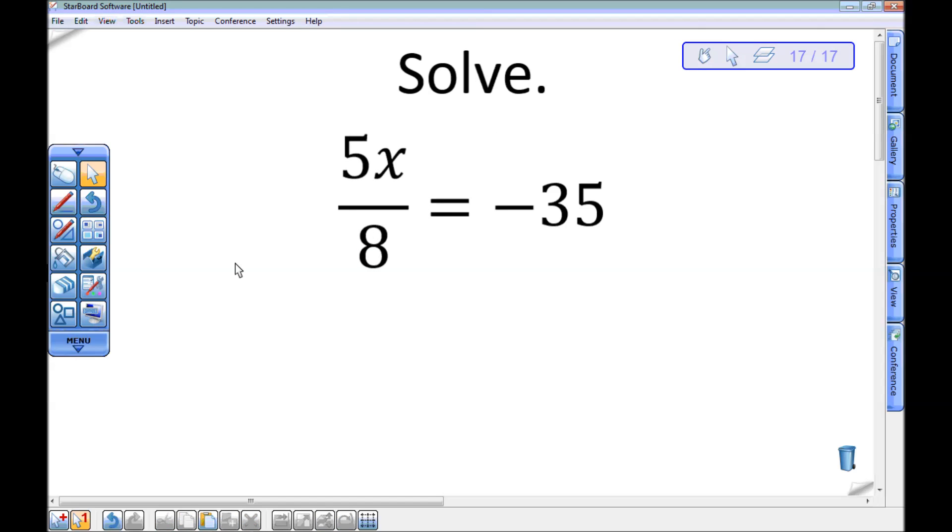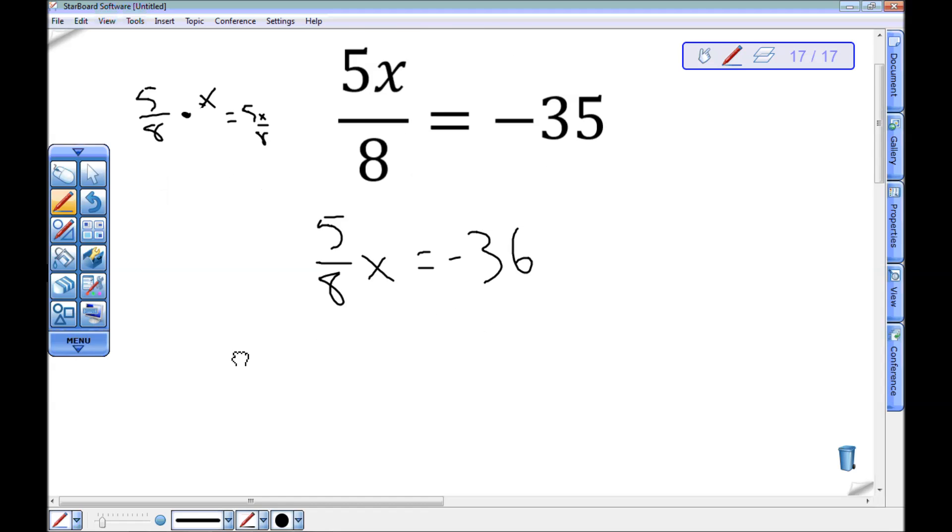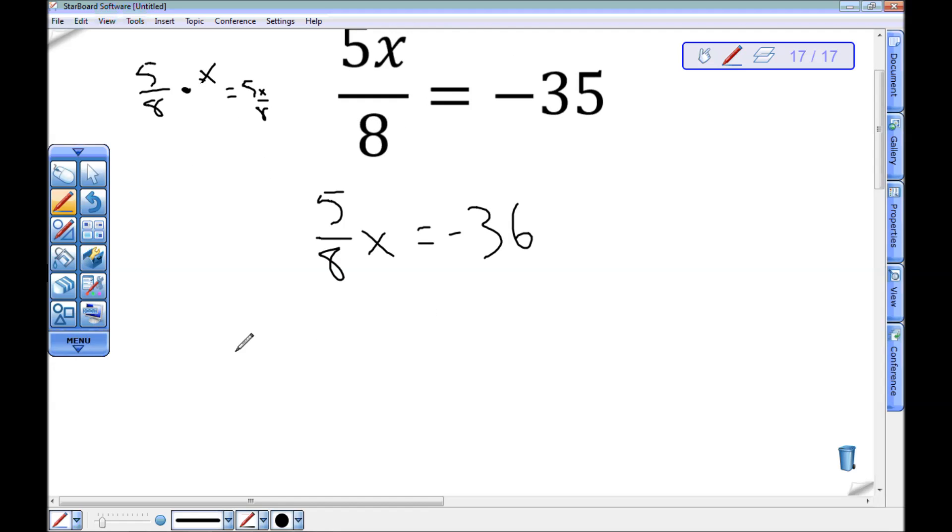And the other way that I can solve this is by recognizing that the coefficient on this x is actually 5 eighths. If you're not convinced, 5 over 8 times x over 1 would certainly give me 5x over 8. So this is the same as 5 eighths times x. So 5 eighths is really the coefficient on that x. Now, how does that make this easier? Well, now I can just divide both sides by 5 eighths.